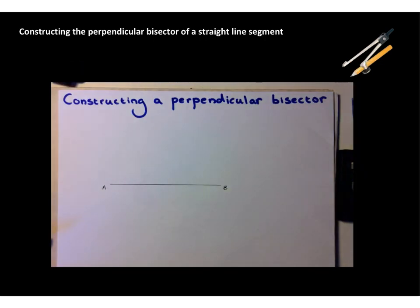We are going to recap some skills from Year 8 where you learned how to carry out some accurate constructions using a pair of compasses. The first thing that we are going to do is remind ourselves how to construct a perpendicular bisector of a straight line segment.